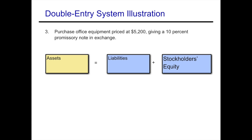Example three: purchase office equipment priced at $5,200, giving a 10% promissory note in exchange. The 10% interest isn't relevant at this point since no interest has accrued yet. We are receiving office equipment, so assets are increasing, and we're issuing a note saying we owe the money, which is a liability. Assets increase by $5,200 and liabilities also increase by $5,200.